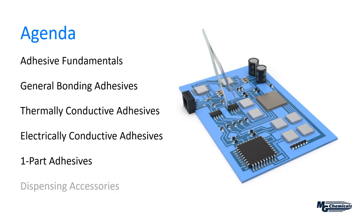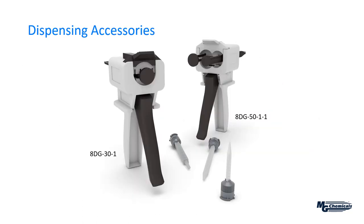Finally, let's look at some dispensing accessories for the two-part systems. We have dispensing guns used with the 50 ml cartridges, and mixing nozzles that attach to the end of the cartridge to mechanically mix the two components together so that you don't have to.